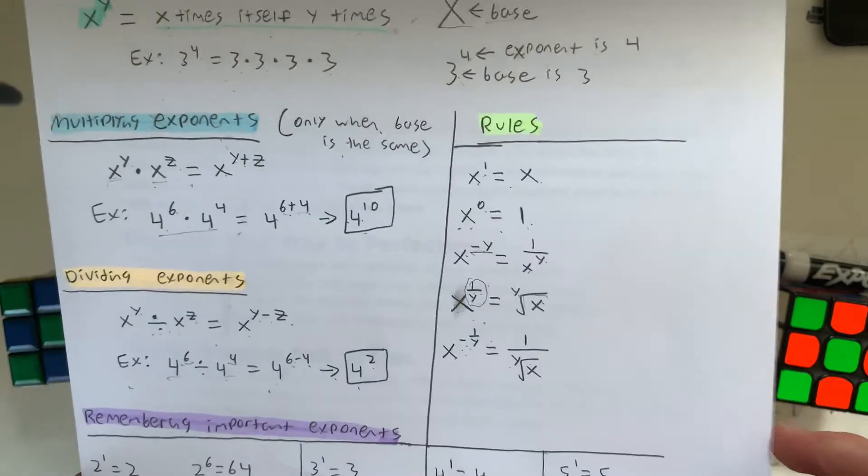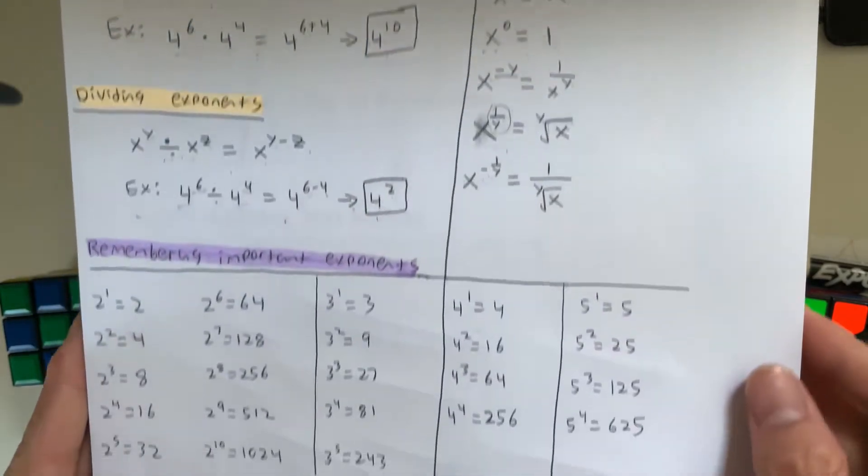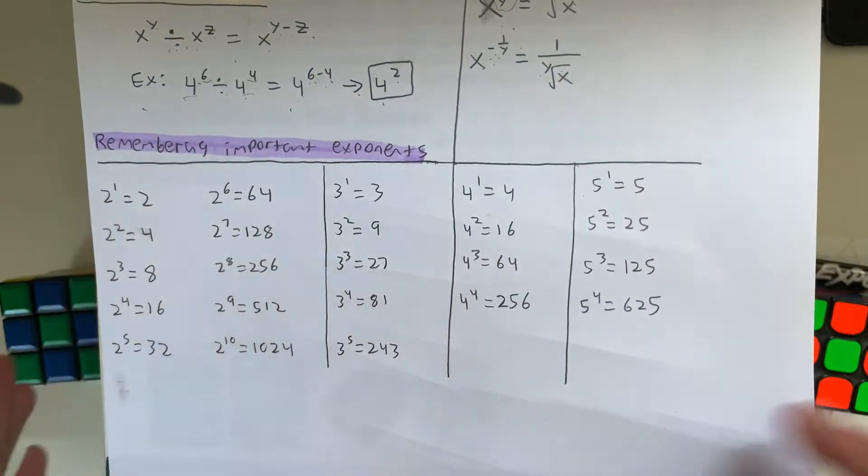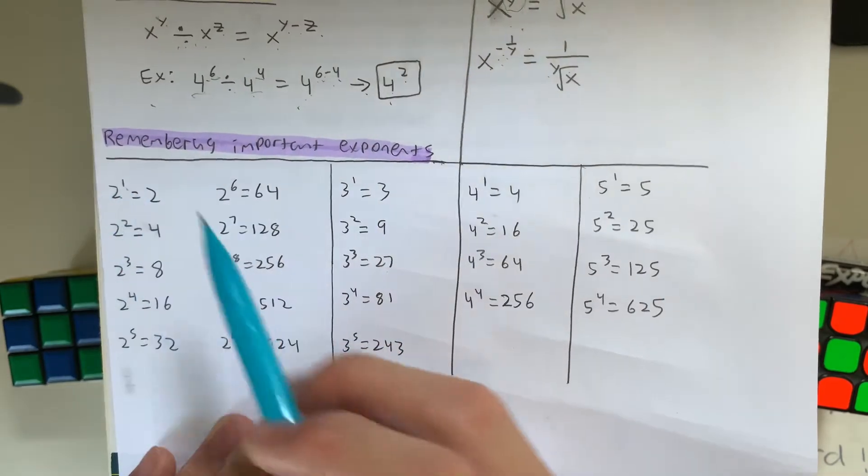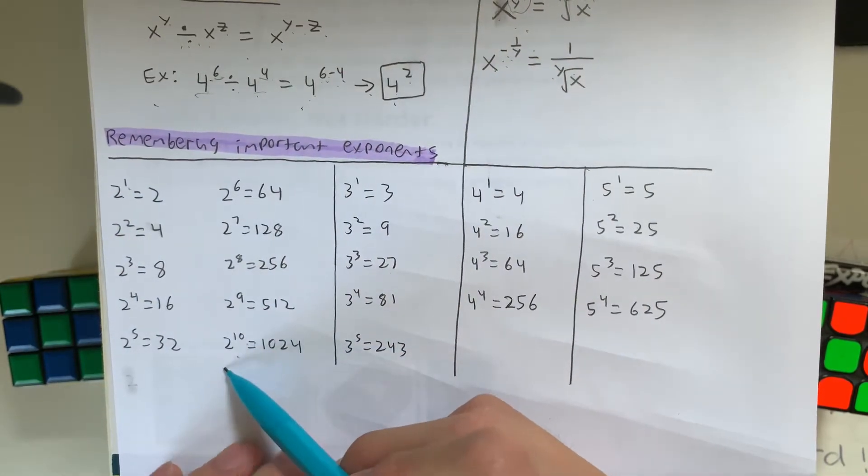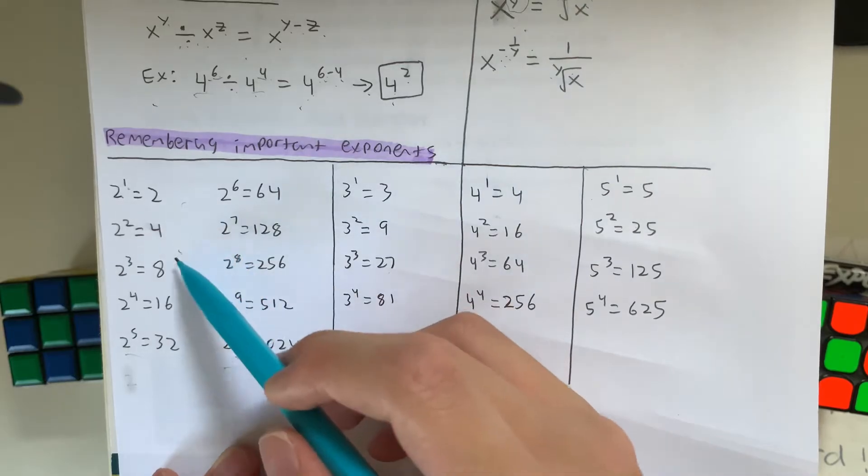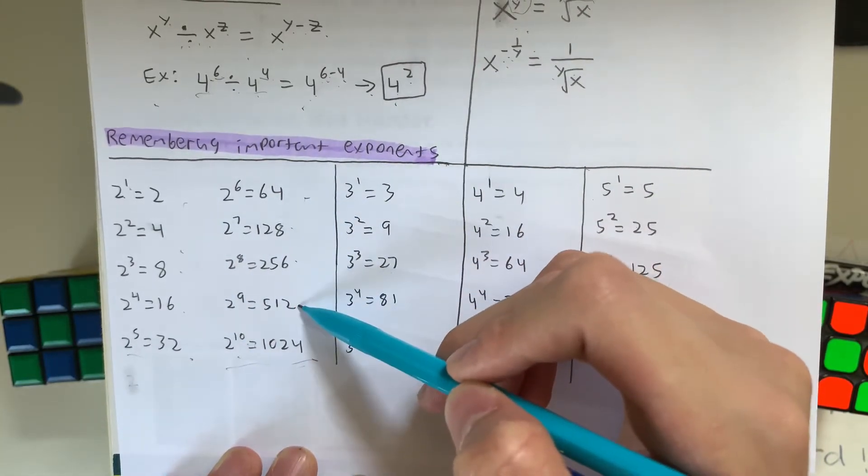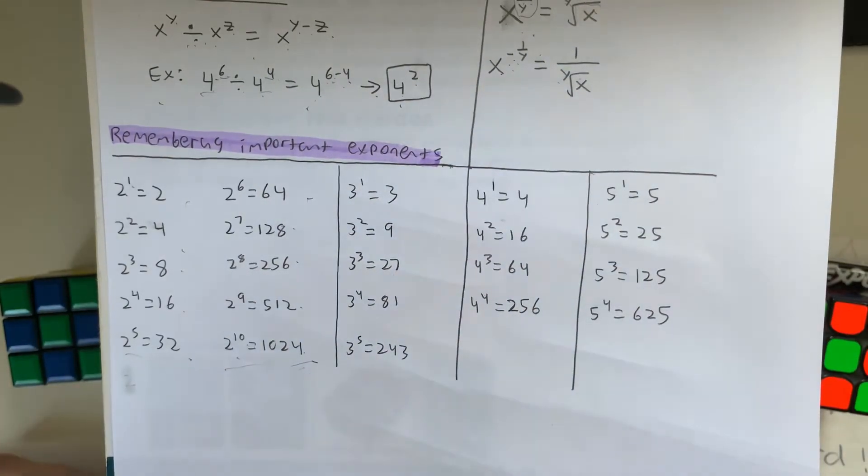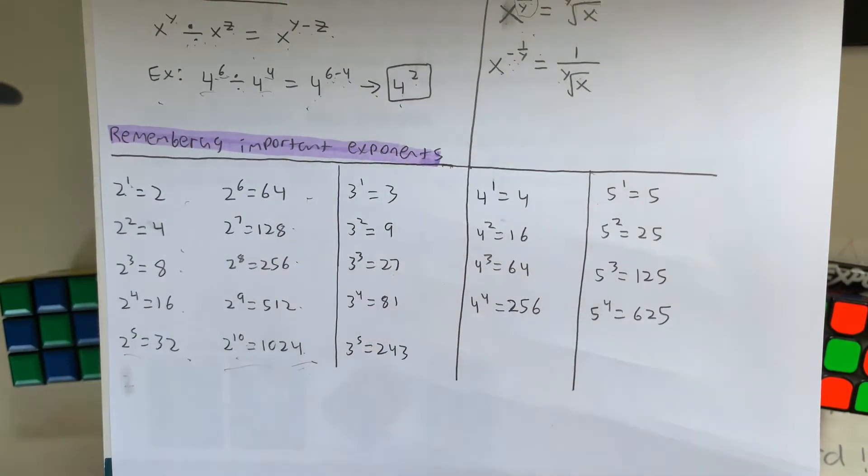And let's continue on. So these are very important exponents that I recommend you guys remember. So it's from 2 to the 1st power all the way to 2 to the 10th. These are very important numbers: 2, 4, 8, 16, 32, 64, 128, 256, 512, and 1024. I recommend you guys memorize this, but if you have a calculator on hand, you don't really need to.